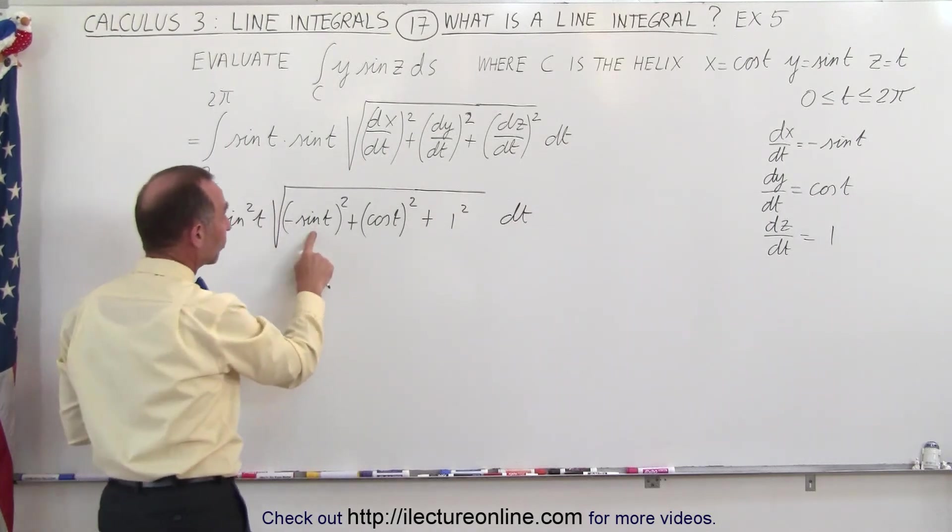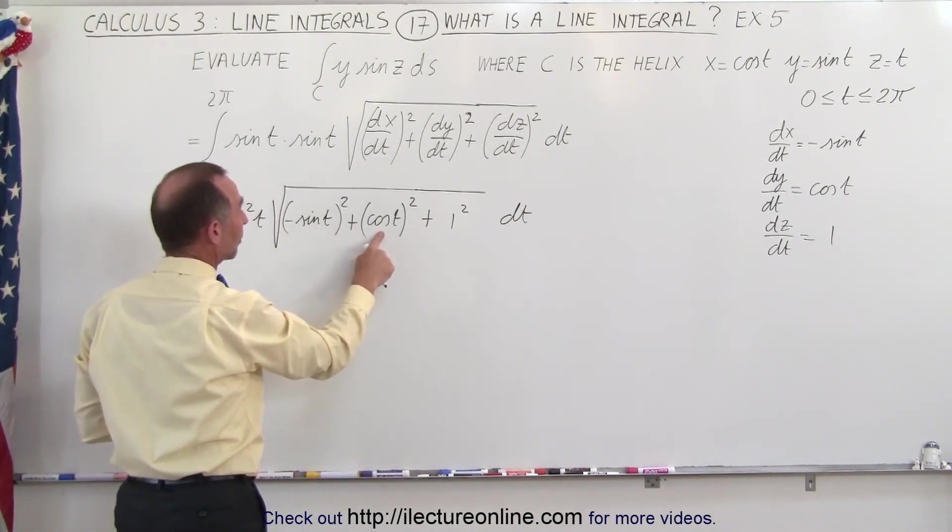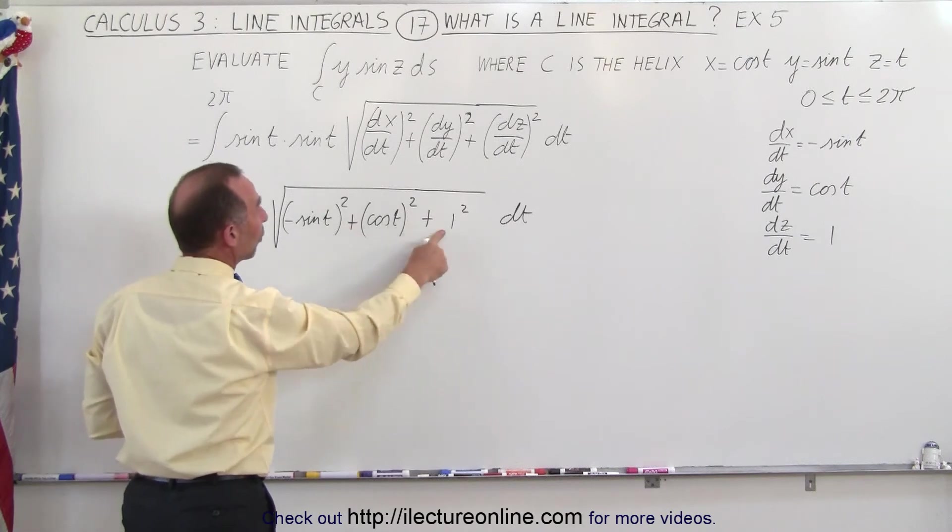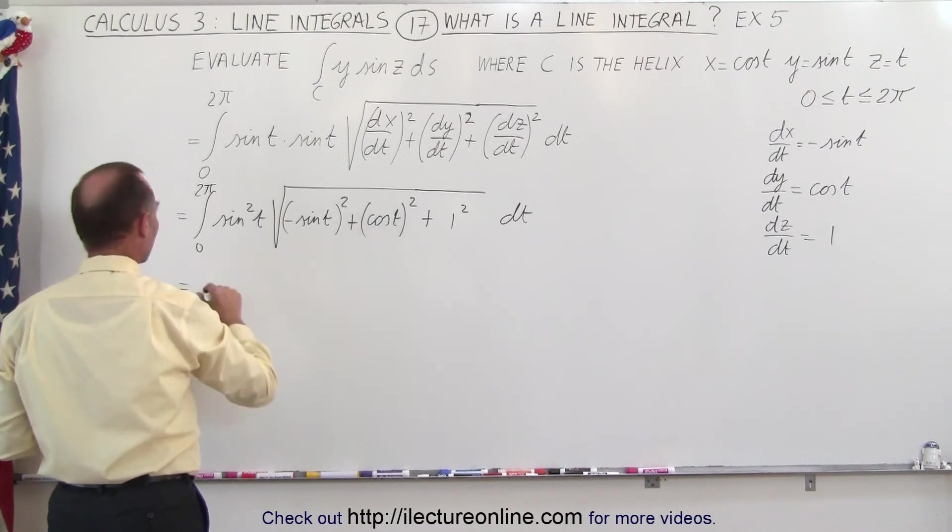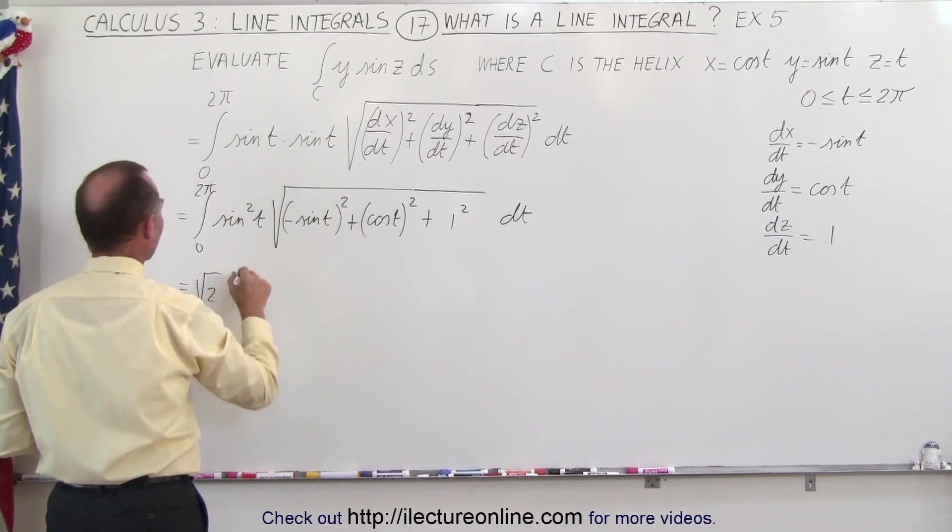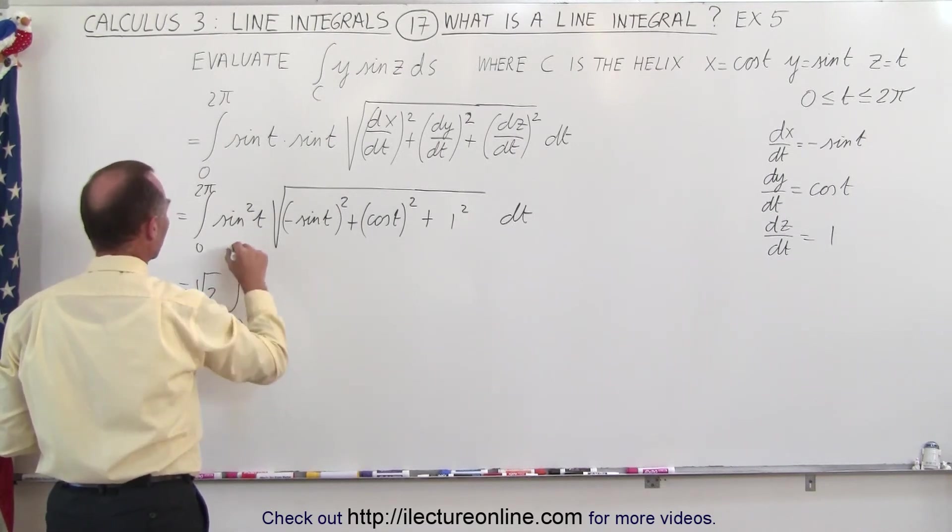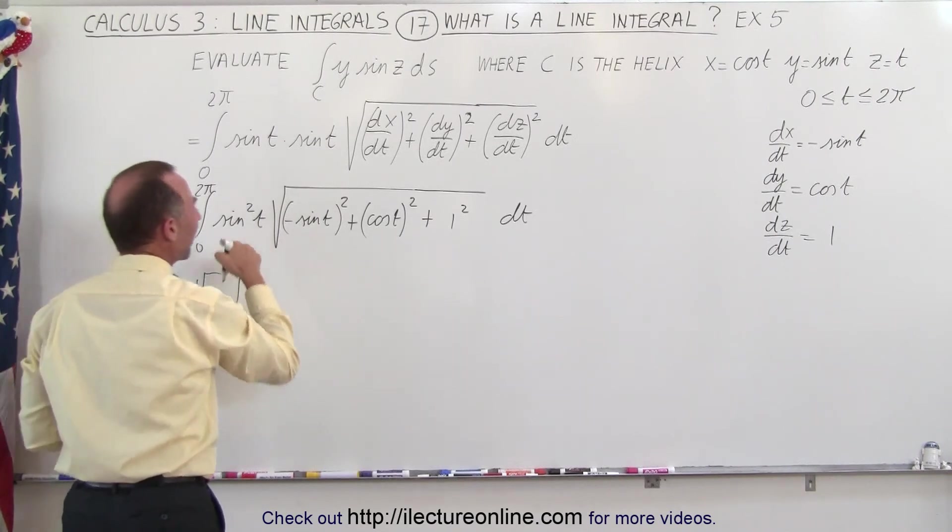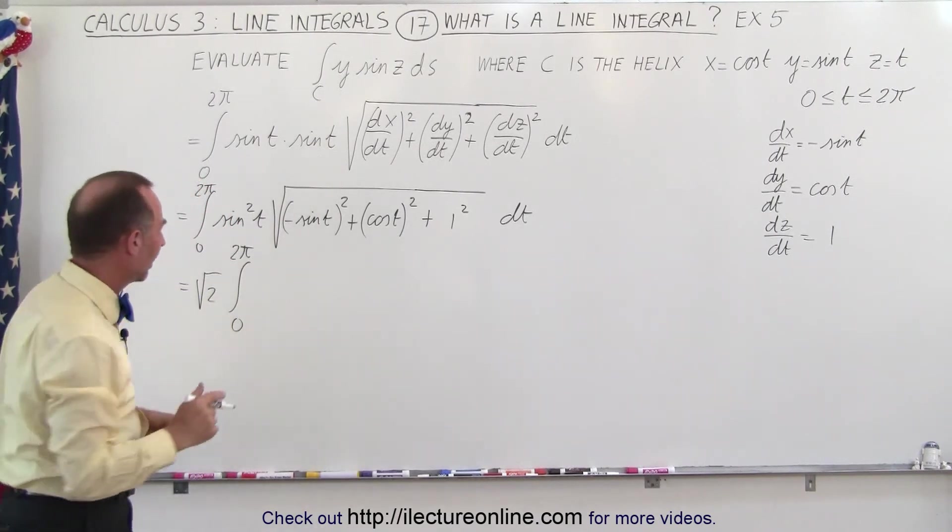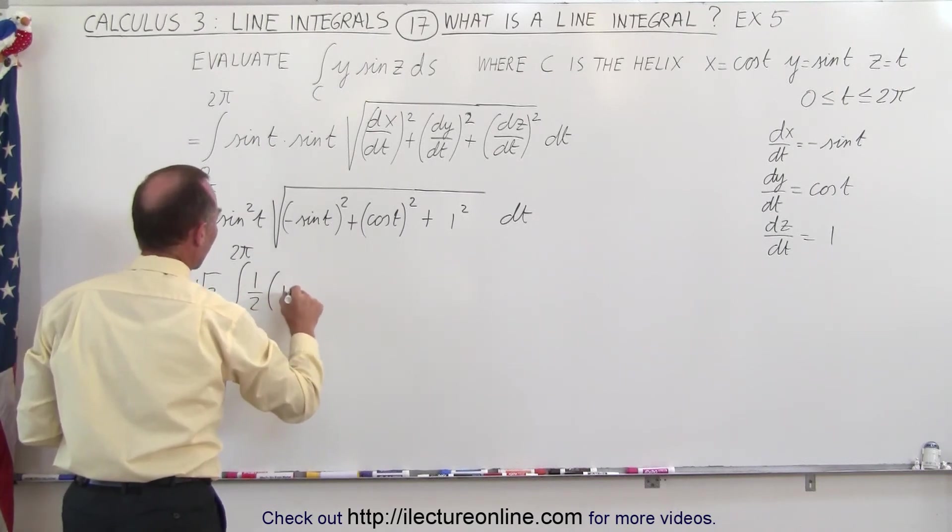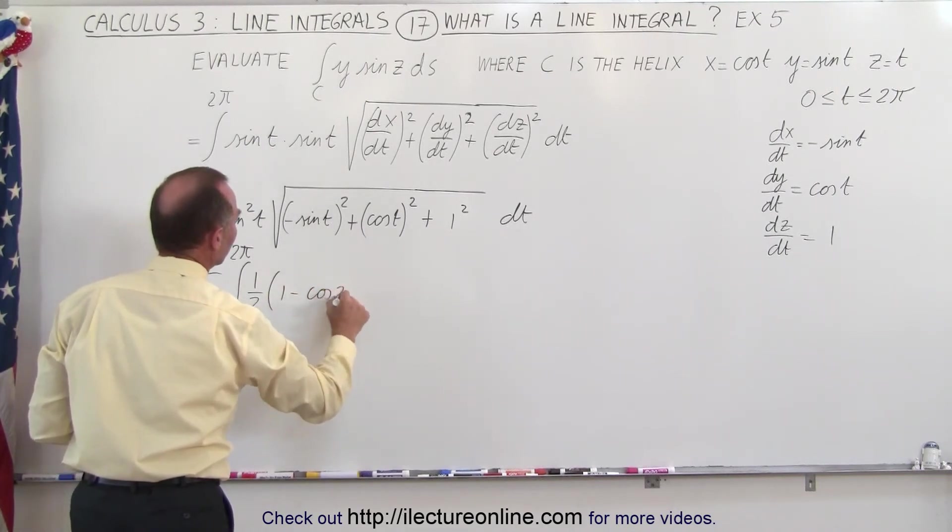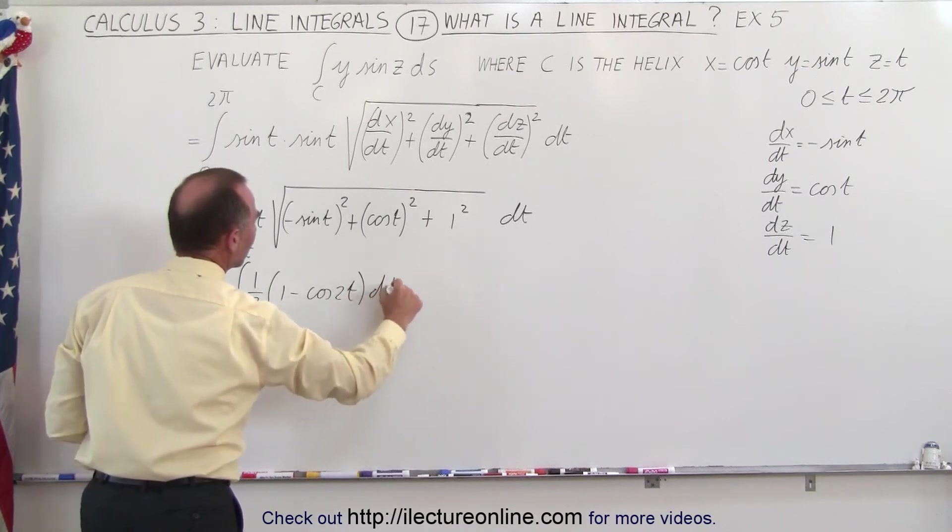Now notice that this is the sine squared of t plus the cosine squared of t, which is 1, and 1 plus 1 is 2, and so we have the square root of 2. So this becomes equal to, I can pull the square root of 2 outside the integral sign times the integral from 0 to 2π times the sine squared of t, but that one I'm going to write as 1/2